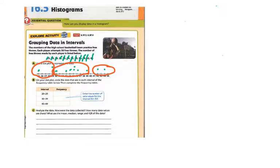They want us to enter the number of data values for each interval. For 30 to 39, I count one, two, three, four, five, six, seven — that's 7. For 20 to 29, I had three. Then for 40 to 49, I had two. Let me verify: seven plus three is ten, plus two is twelve total data points.